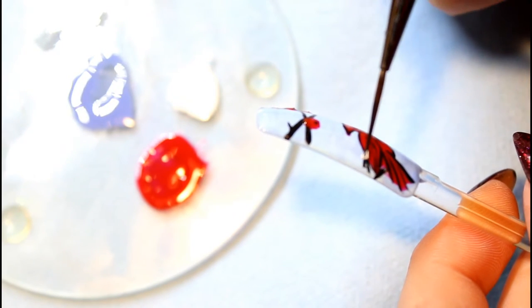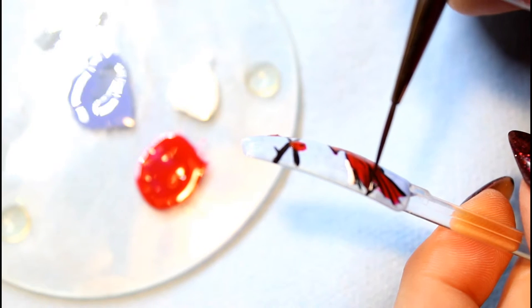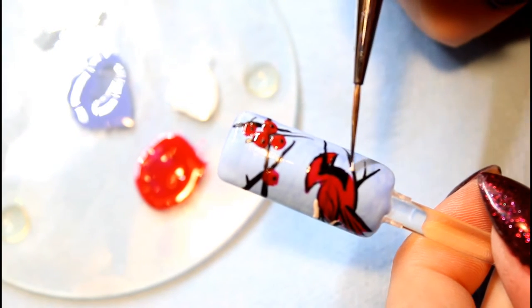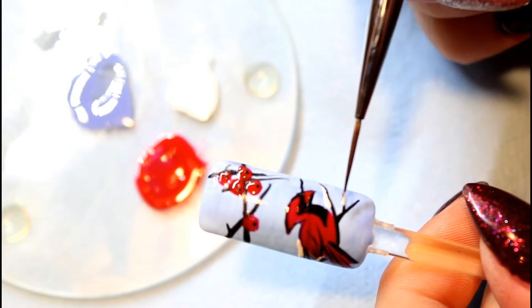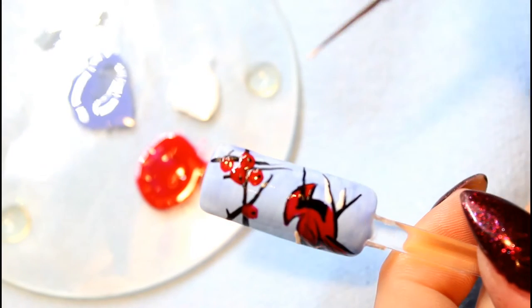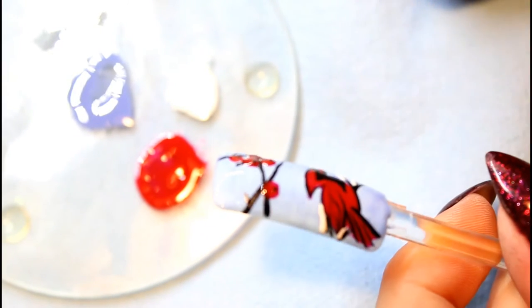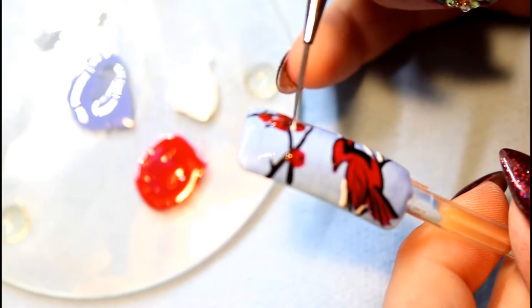Next, using Arctic Freeze and a striper brush, add snow to the top of your branches. Add snow on top of each berry.